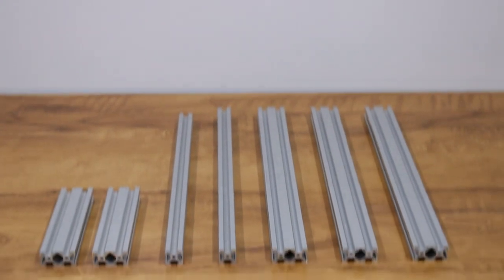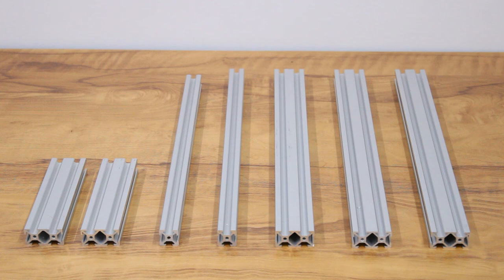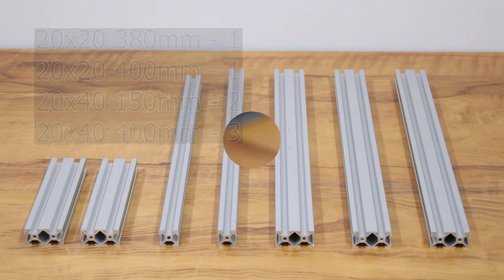The frame consists of seven pieces of aluminum extrusion profiles of 20 by 20 mm and 20 by 40 mm size. The lengths required are 20 by 40 mm, 150 mm length, two pieces; 20 by 20 mm, 380 and 400 mm length, one each; and 20 by 40 mm, 400 mm length, three pieces. We will attach the frame using 90 degree corner brackets, M5 by 10 bolts, and M5 sliding nuts.